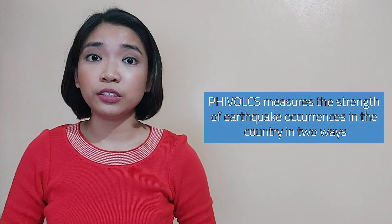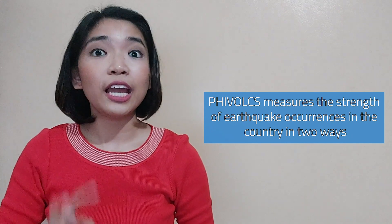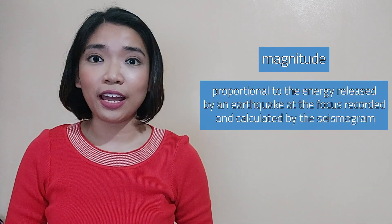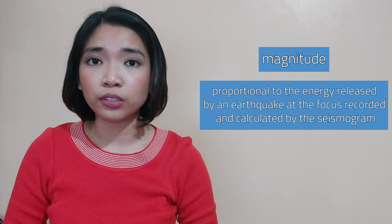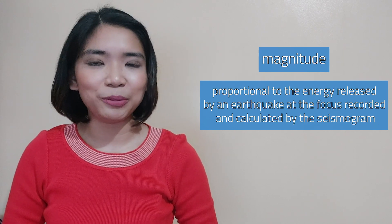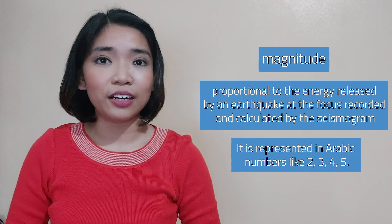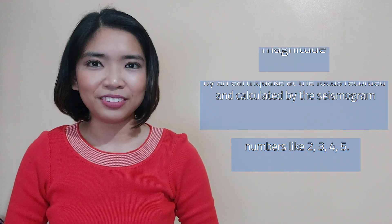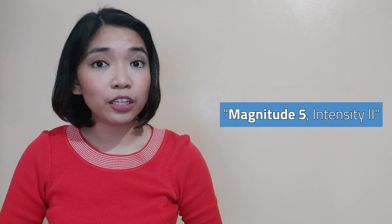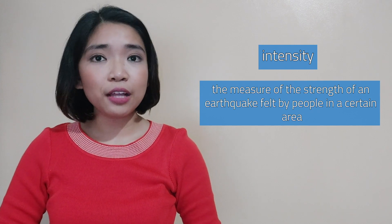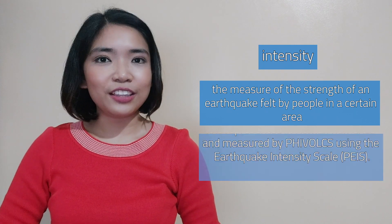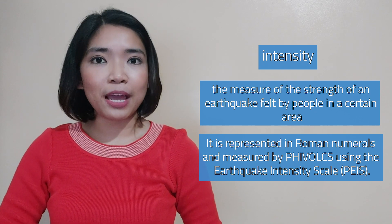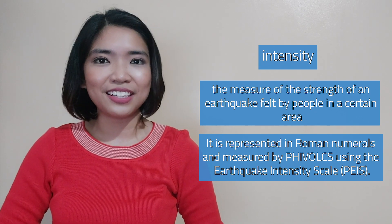PHIVOLCS measures the strength of earthquake occurrences in the country in two ways. First is magnitude, which is proportional to the energy released by an earthquake at the focus, recorded and calculated by the seismogram. It is represented in Arabic numbers like 2, 3, 4, 5. You might hear in the news: magnitude 5, intensity 2. Second is intensity, which is the measure of the strength of an earthquake felt by people in a certain area. It is represented in Roman numerals and measured by PHIVOLCS using the earthquake intensity scale.